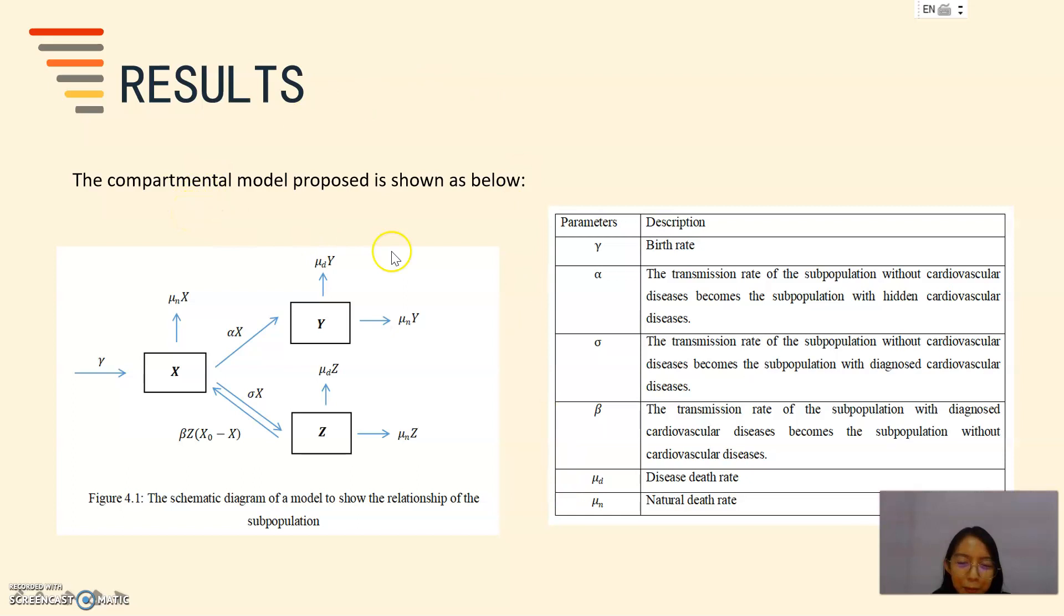The compartmental model proposed for the cardiovascular disease is shown below. The schematic diagram of the model shows the relationship between the subpopulation X, Y, and Z.